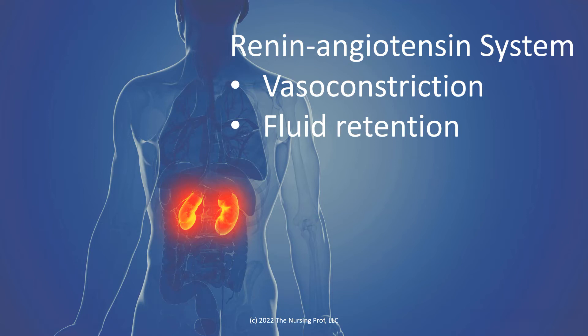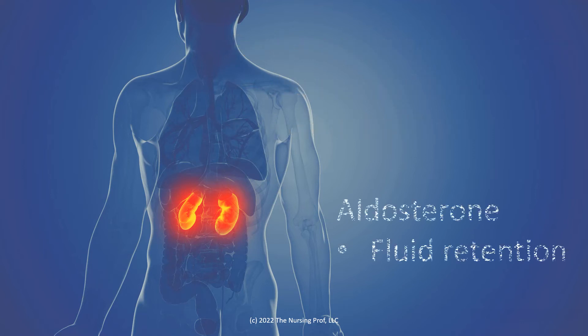Next, we have the renin-angiotensin system. The renin-angiotensin system causes two things to happen: vasoconstriction and fluid retention. We just heard about vasoconstriction with the sympathetic nervous system, so now we have a secondary condition also causing vasoconstriction, further limiting the amount of blood flow to the tissues of the body.